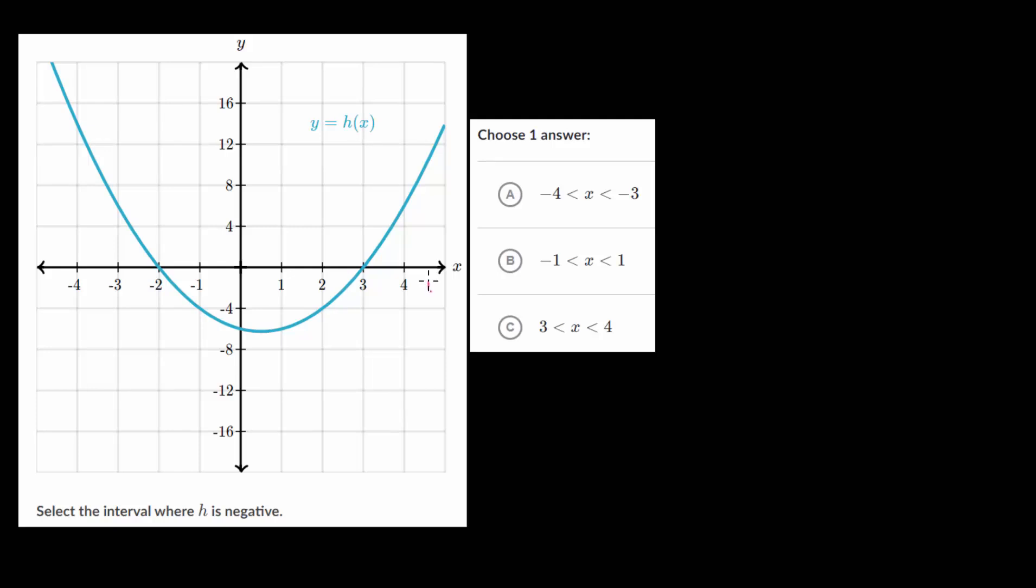Because remember, this x-axis, this is when y is equal to 0. It's all along this x-axis that we have our borderline here. So anything below that is part of our negative interval. Let's find where it crosses at y equals 0, or essentially these x-intercepts here.